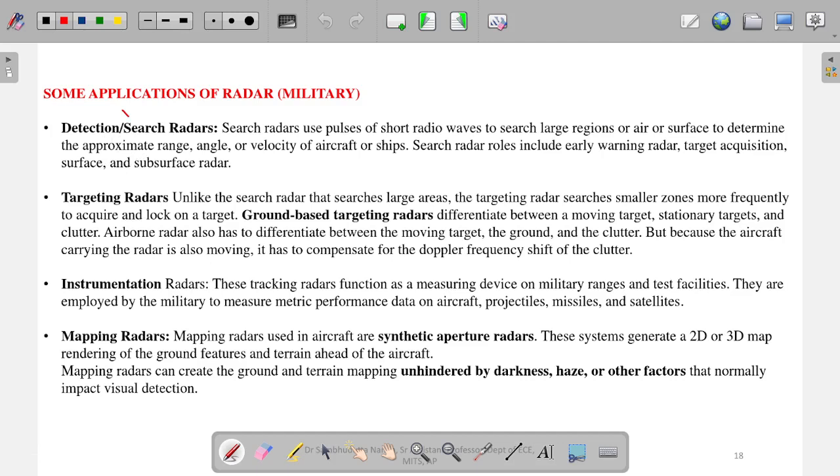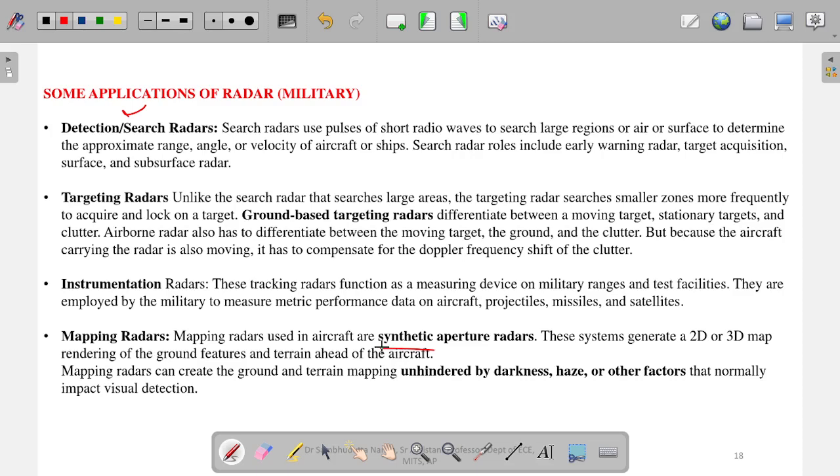Next is some applications in military. Detection and search radars can detect any object coming from far and can search the exact location of that object and pinpoint it. Targeting radars are basically used for targeting enemy aircraft that come to our territory. These radars can target them. They can constantly follow it so it does not go out of site. Instrumentation radars are there, then mapping radars through which proper mapping of the ground is done in 3D structure—how much height is where. Sometimes these are also called synthetic aperture radars, which are used for radar mapping.